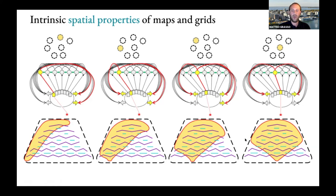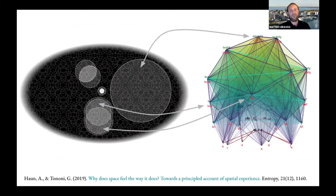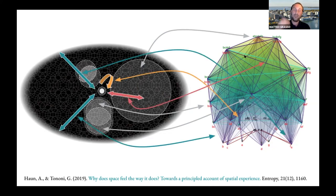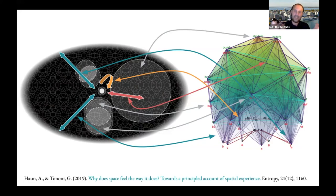Ultimately, what we would like is an objective physical explanation of our phenomenology — a mapping between phenomenology and properties of a cause-effect structure that explains every phenomenal distinction in terms of a physical, causal distinction, and every relation between phenomenal distinctions in terms of a relation between physical distinctions. For all the computational details of how to unfold a cause-effect structure, I invite you to check Antonini's 2019 'space paper,' published in Entropy.